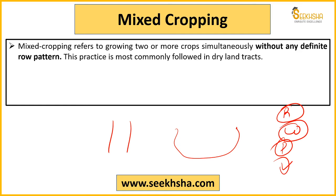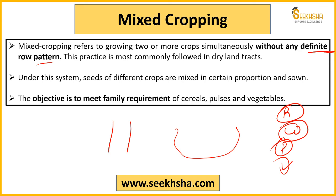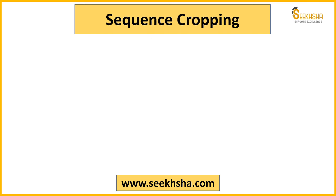Inter-cropping and mixed cropping are often confused and wrong definitions are written. The key difference is: inter-cropping follows a definite row pattern, mixed cropping does not follow a definite row pattern. Mixed cropping is practiced in dry-land areas. Different seeds are mixed in proportion and then sown. The objective is mainly to fulfill family requirements — it is used in subsistence agriculture where every crop need like cereals, pulses, and vegetables is met.